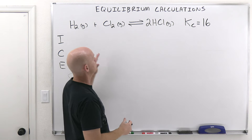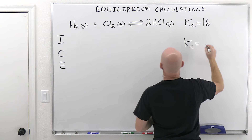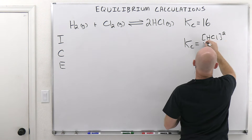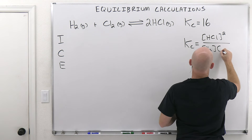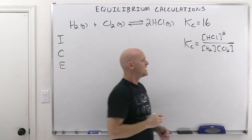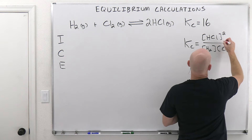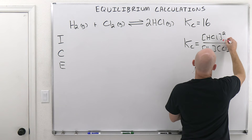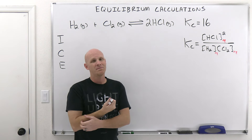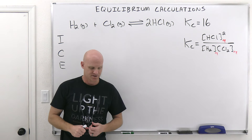In this case, we're given a Kc value, and the first thing I want to do is set up my equilibrium constant expression. We're going to have HCl squared all over the concentration of H2 times Cl2, and that equals 16. It's implied — these are the concentrations measured at equilibrium. The problem is we're only given a way of getting the concentrations initially. We're sticking two moles of both H2 and Cl2 in a two-liter vessel.